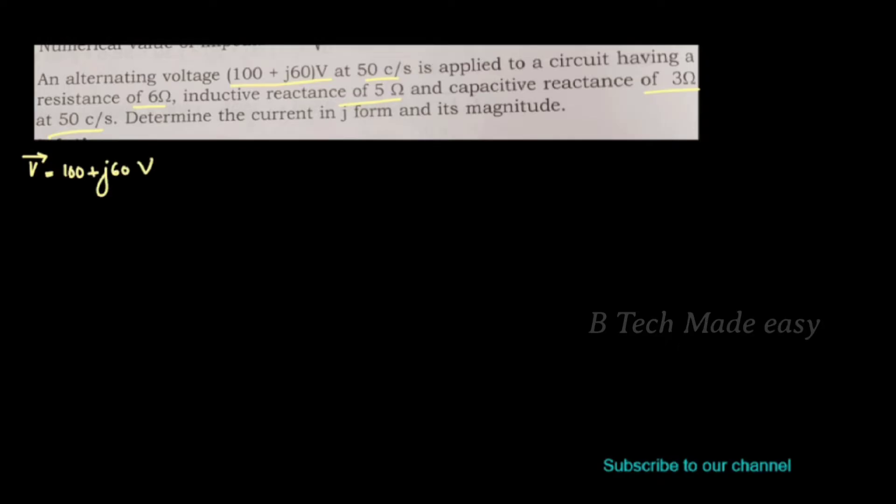Determine the current in rectangular form. The vector voltage V is 100 plus j16 volt. The resistance R is equal to 6 ohm. The inductive reactance represented by X suffix L is equal to 5 ohm. Inductive reactance and capacitive reactance are expressed in j terms.